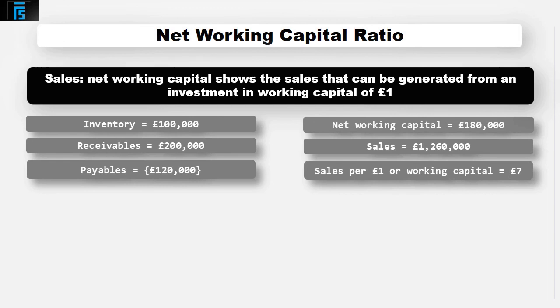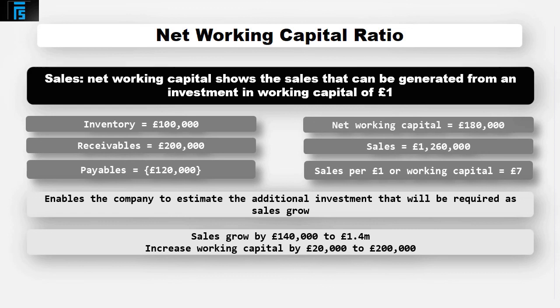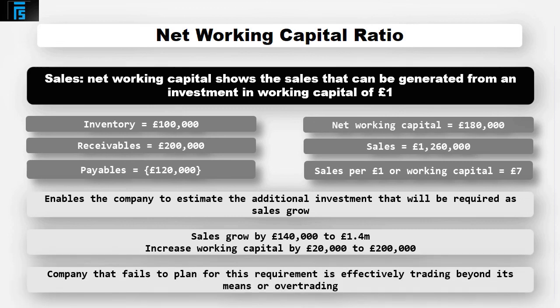The significance of this number is that it enables the company to estimate the additional investment that will be required as sales grow. For example, if sales are forecast to grow by £140,000 to £1.4 million, an additional investment of £20,000, £140,000 divided by 7, will be required, bringing the total investment to £200,000. A company that fails to plan for this requirement is effectively trading beyond its means or over-trading.